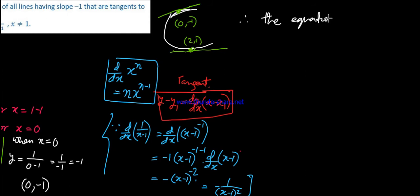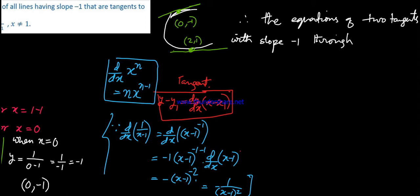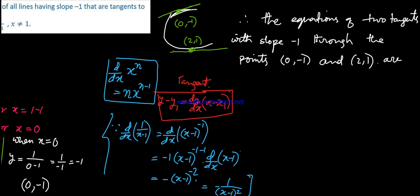We need to find the equations of two tangent lines, both with slope minus 1, passing through the points (0, minus 1) and (2, 1) respectively. Using the point-slope form y minus y1 equals slope times x minus x1.